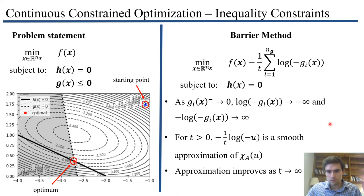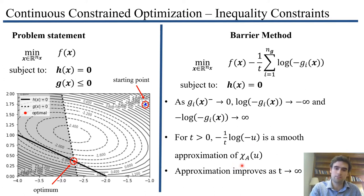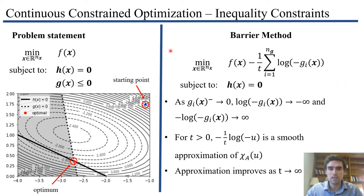The term minus (1/t) log(−u) is a smooth approximation of the xi function. As t goes to infinity, this approximation improves. So you might think: all I have to do is set t to a very high number — maybe a few million — solve this problem using my constrained Newton method, and I'm finding the solution for the original inequality-constrained problem. My xi function is the dotted line: zero penalty until reaching zero, then infinity. The smooth log-barrier curves get closer to that dotted line for higher values of t.